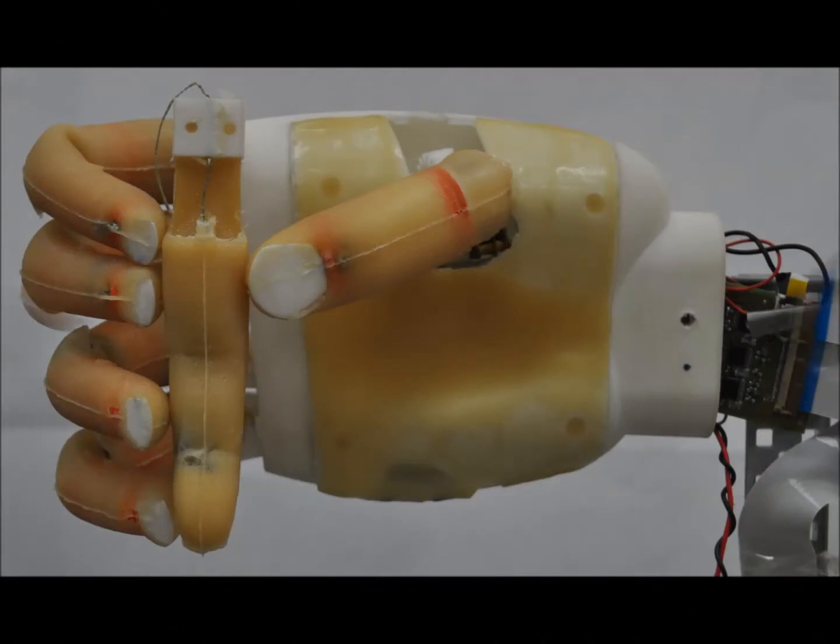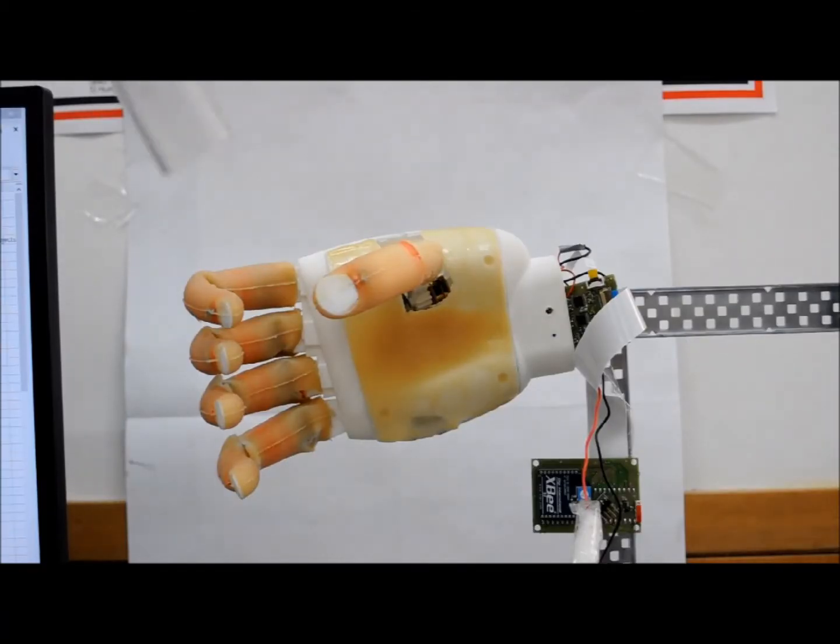In this video, we show the implementation of a twisted string system in the UC Soft Hand.